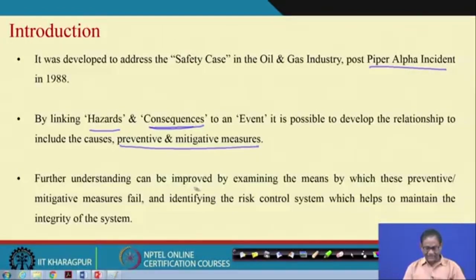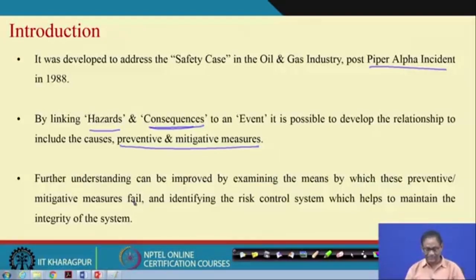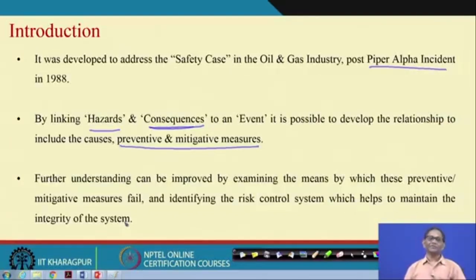Further understanding can be improved by examining the means by which the preventive and mitigating measures fail. You have preventive and mitigating measures, but they can also fail. This means identifying risk control systems which help to maintain the integrity of the system — both mechanical integrity and operational integrity.